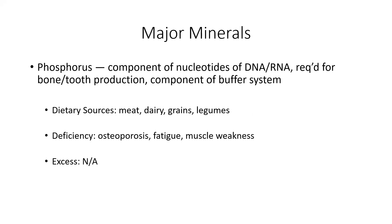Now, phosphorus. This one is a main component of our nucleotides — so our DNA and RNA specifically. It is also required for bone and tooth production and is a component of one of the buffer systems in our bodies. Dietary sources include meats, grains, dairy, and legumes. Deficiencies could cause osteoporosis, fatigue, and muscle weakness. There are really no known problems with excess phosphorus in our bodies.